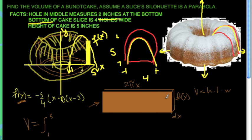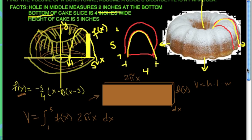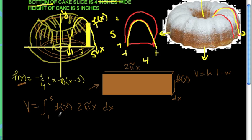And you can read the height, length, and width right from here. The height is f of x. The length is 2 pi x.